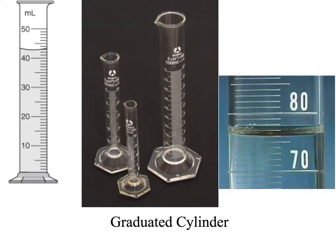The last piece of glassware you need to know is certainly one you'll be using a lot in the lab — it's called a graduated cylinder. We use graduated cylinders to determine the volume of a liquid. Running up the side looks much like a ruler, and wherever the liquid reaches you can read the volume. We always read to the bottom of the curved line at the top of the fluid, which is called the meniscus. So if we've got our 40 and 50 lines here, this looks like 43 milliliters of solution.